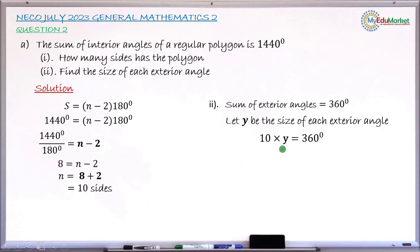It is y that we want to find, which stands for the size of each exterior angle. Dividing both sides by 10 gives: y equals 360 divided by 10. Dividing 360 by 10 gives 36 degrees, which means each exterior angle is 36 degrees.